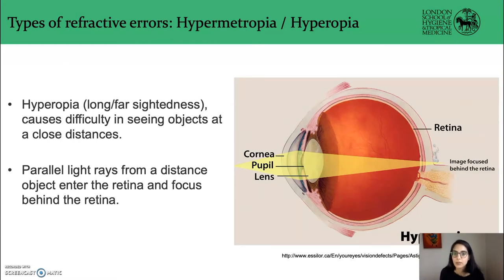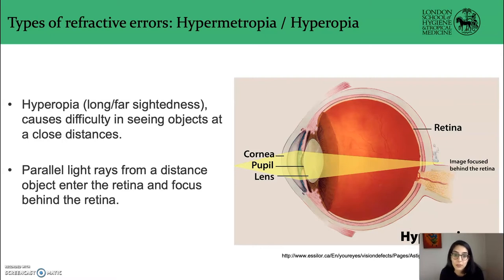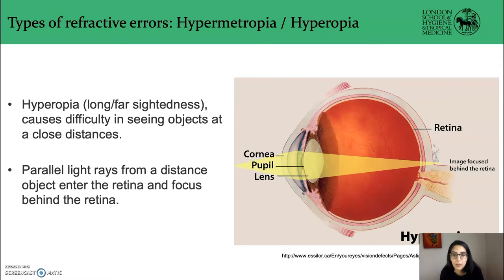Hyperopia or hypermetropia is caused by a focusing problem. Think of it like a cinema: the film projector has to be focused to get a sharp picture on the screen, and light passes through your eye's natural lens the same way it passes through the projector's lens. In hyperopia, the length of the eyeball is too short for the strength of the eye's lens, so the light is focused too far back behind the retina and things appear blurred.